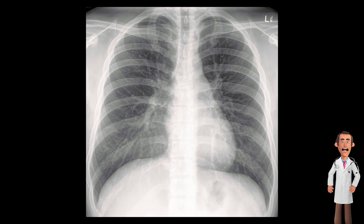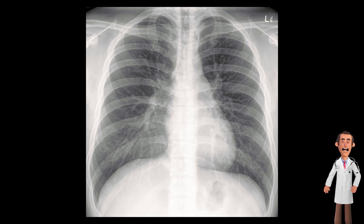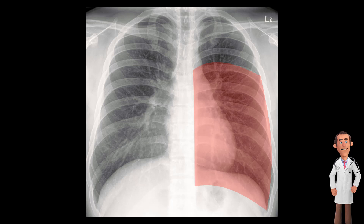Moving on to the left side, the left lung is divided into two lobes, also by an oblique fissure. Here is the left upper lobe, which appears to occupy the entire lung field and touches the left heart border. The left lower lobe is similar to the right and shares a border with the left hemidiaphragm.